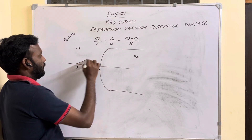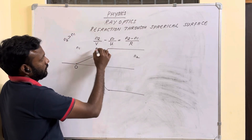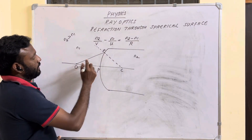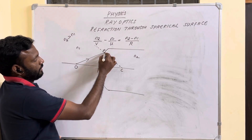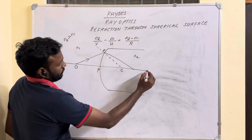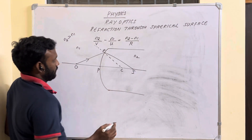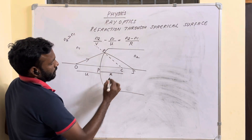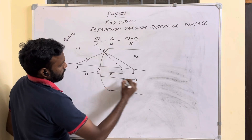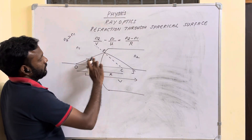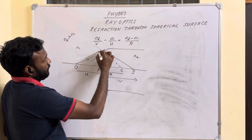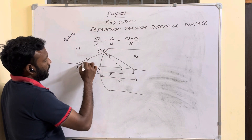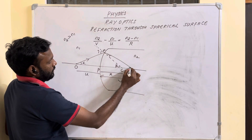Let's place an object on the principal axis. A ray emanates from the object and strikes the spherical surface at point M. We draw a normal passing through the center of curvature C. As the ray travels from a rarer to a denser medium, it bends towards the normal and forms image I. The angle of incidence is i, angle of refraction is r, and we label angles alpha, beta, and gamma.